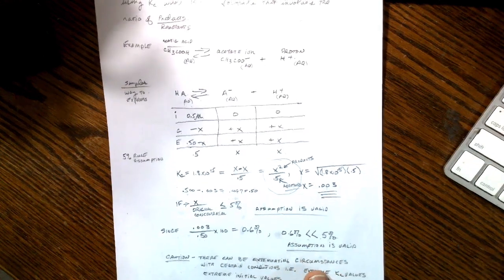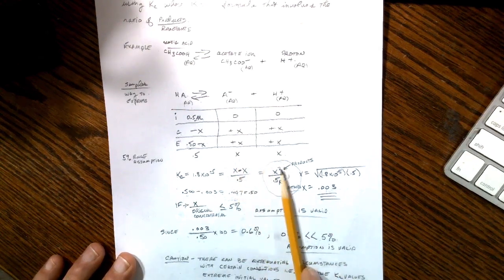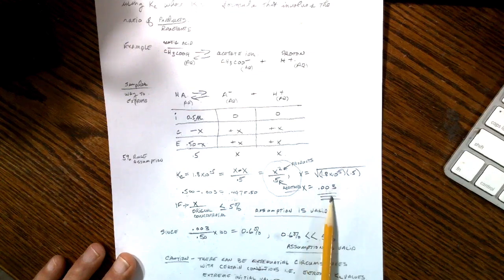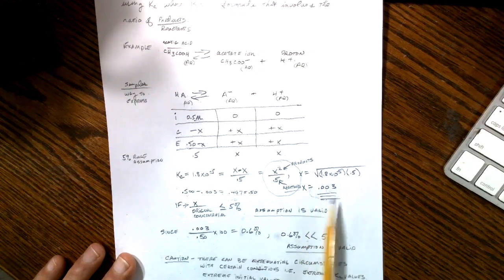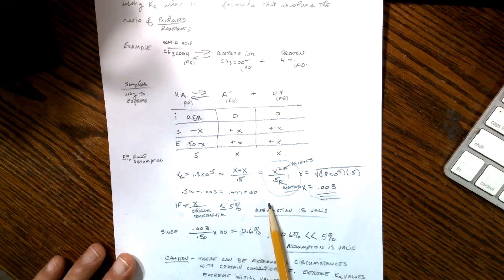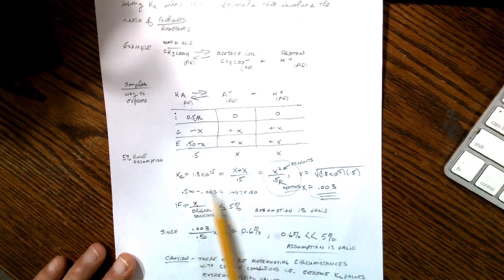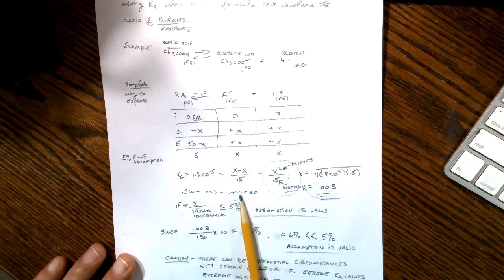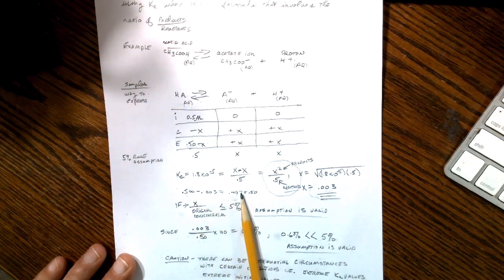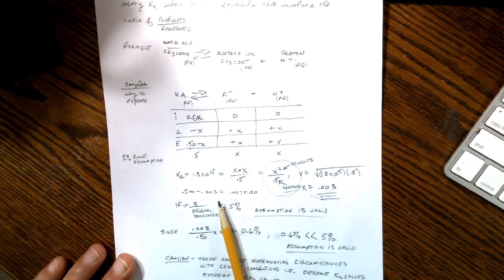Right now, the main thing here is that you understand how to determine whether or not you can get by with this simple calculation. This one here, which comes up with this, this would probably be your answer. What's the value for x? Or what's the equilibrium concentration of this? You would take this minus this, and then the equilibrium concentration would be 0.497. That could be the answer to this particular kind of question.